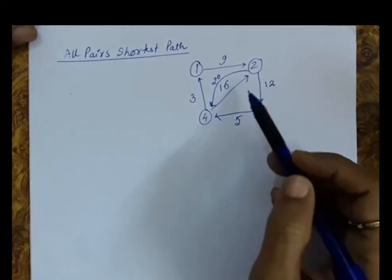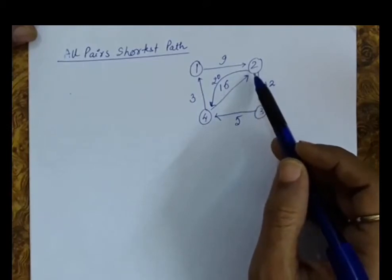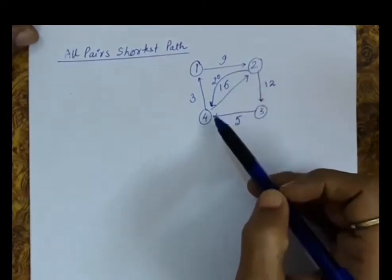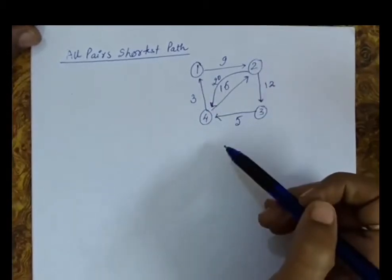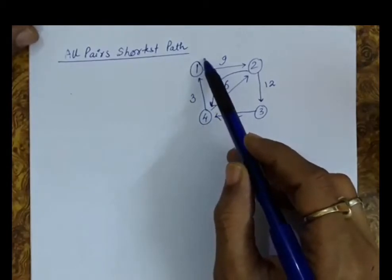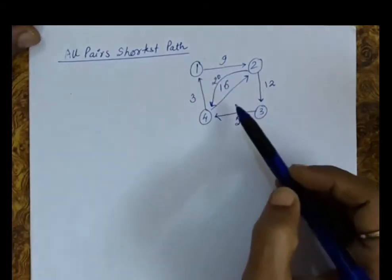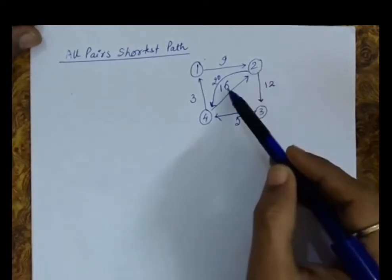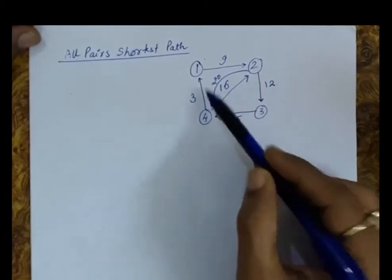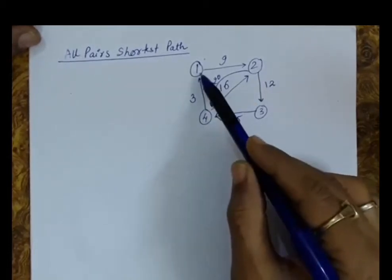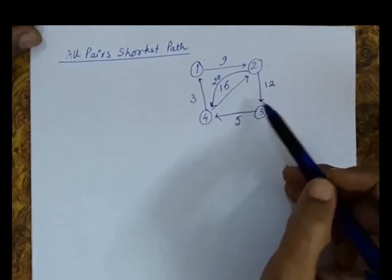For finding the all pairs shortest path, we apply an algorithm that checks the distances between pairs of stations via other stations. At one point of time we take one vertex as a mediator and find out if the path via that vertex is minimum. For example, if I want to go from 4 to 2, the direct path from 4 to 2 has distance 16. But if I go through vertex 1 — so 4 to 1 and then 1 to 2 — the distance becomes 3 plus 9, which is 12. So I will follow this path.